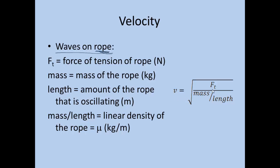So in this case, we have velocity is equal to the square root of F_T over mass per length. F_T is the force of tension of the rope. So how tight is the rope held between two ends? The mass is the mass of the rope in kilograms. The length is the amount of rope that is oscillating.